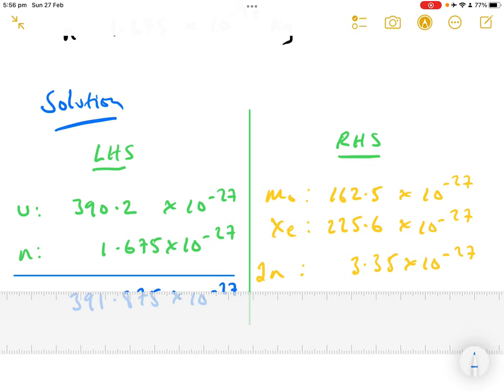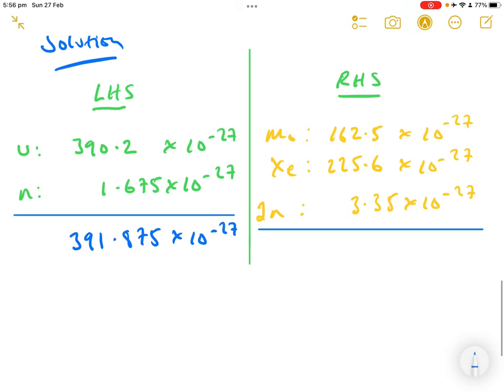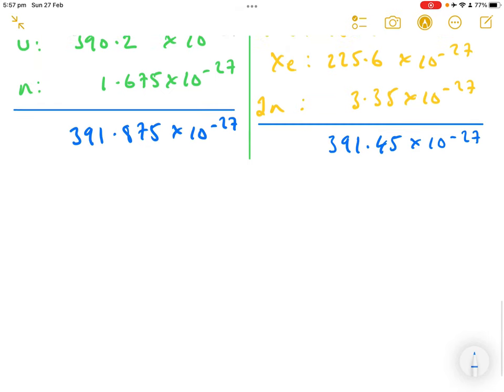When we work out what we've got on the right-hand side, that turns out to give us 391.45 times 10 to the minus 27 kilograms. Don't do any rounding at this point, leave the rounding till the very last line. The mass loss then, which we'll call m, is basically the mass before take away the mass after.